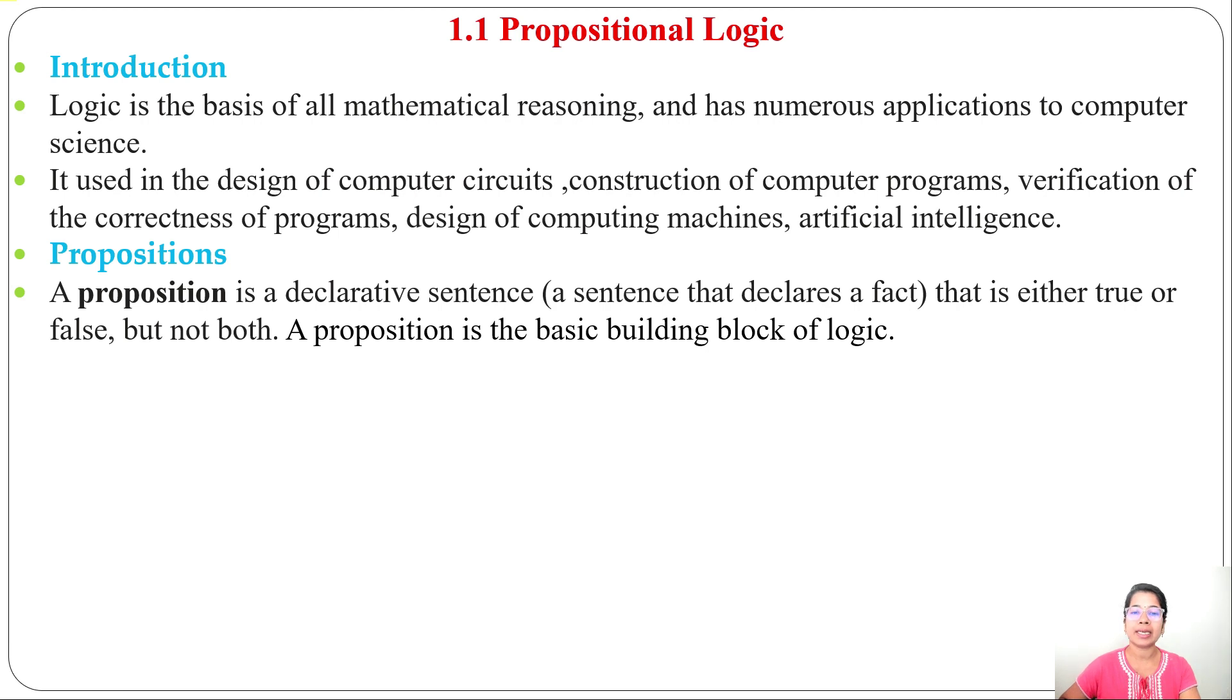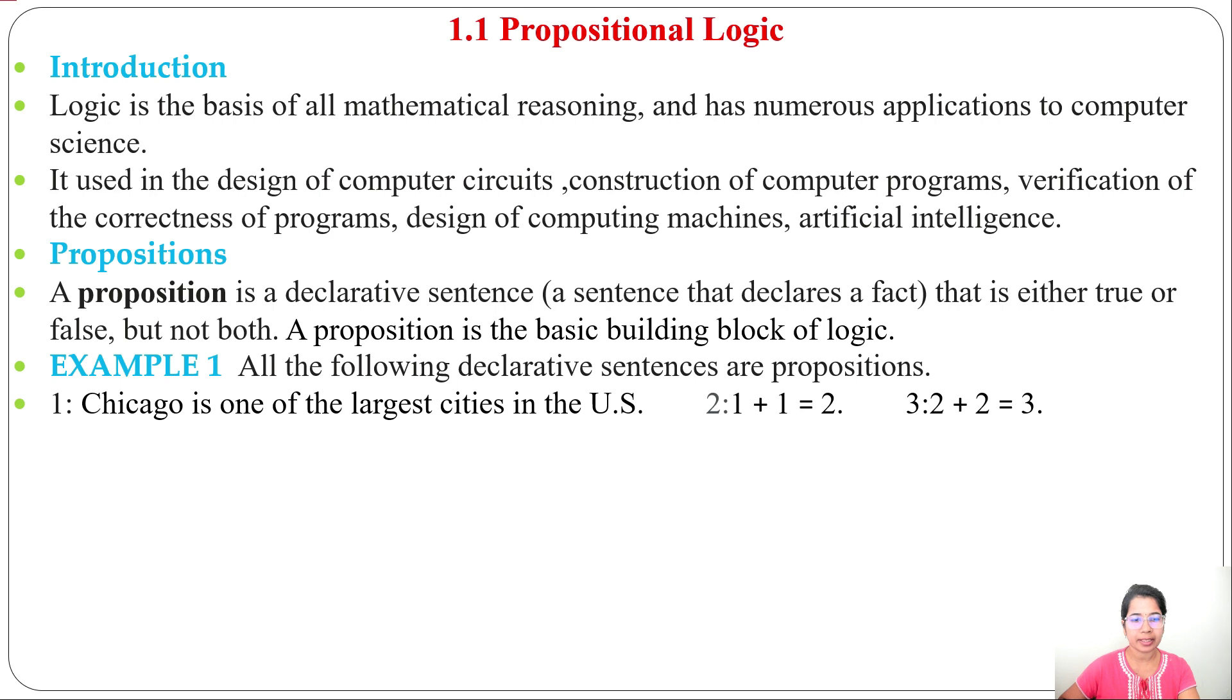What is a Proposition? It is a declarative sentence that declares some fact. It can be either true or false, but not both. Let's see some examples. Three statements: 1) Chicago is one of the largest cities in the U.S., 2) 1+1=2, 3) 2+2=3. All three are propositions. While 1 and 2 are true, 3 is false. 2+2 equals 4, but here it's written 3, so this is false but still it's a proposition. First statement is true, second one is true, third one is false, but all are propositions.